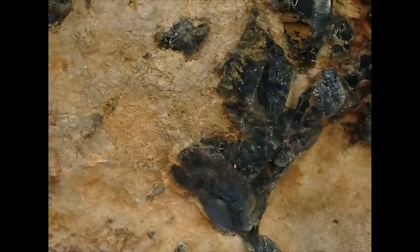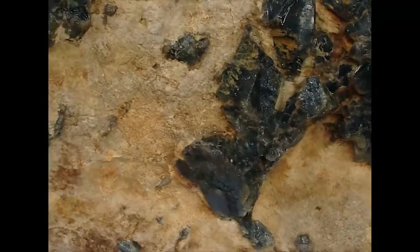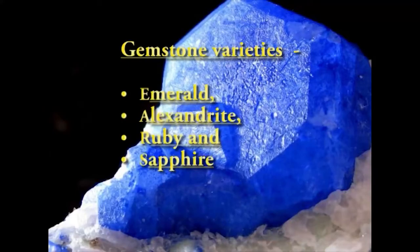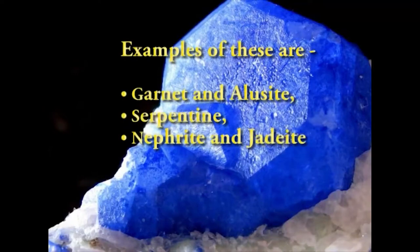Many of the intrusive gem-bearing rocks formed as coarse-grained granites called pegmatites. Geodes also originated in igneous rocks in which quartz and other minerals have been precipitated as crystals in almost spherical cavities formed by chemical-rich molten or aqueous residues trapped in the magma. The chemical reactions generated in metamorphic rocks when molten magma was forced into cooler rocks created the gemstone varieties of emerald, alexandrite, ruby and sapphire. Other gem minerals were formed as a result of large-scale shearing and crushing of rocks — examples are garnet, eudialyte, serpentine, nephrite and jadeite.